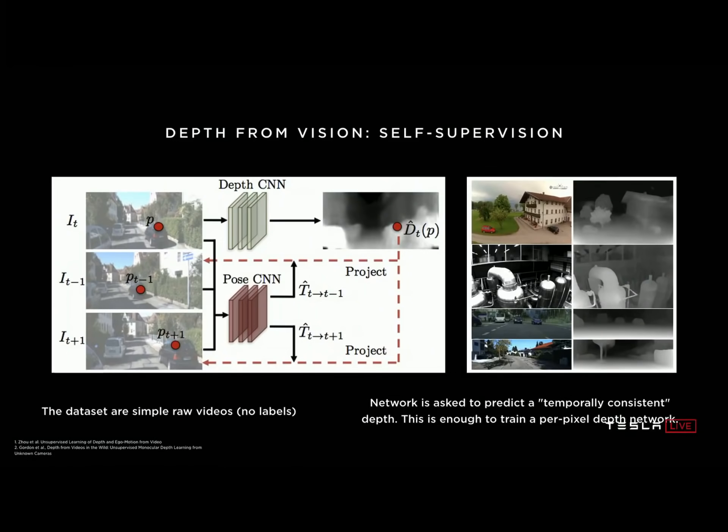The last mechanism I'll talk about briefly is slightly more fancy and a bit more technical. There are a few papers over the last year or two on this approach — it's called self-supervision. What you do is feed raw videos into neural networks with no labels whatsoever, and you can still get neural networks to learn depth. The neural network predicts depth at every single frame of that video, with no explicit targets to regress to. Instead, the objective for the network is to be consistent over time — whatever depth you predict should be consistent over the duration of the video — and the only way to be consistent is to be right. The neural network automatically predicts the correct depth for all the pixels, and we've reproduced some of these results internally, so this also works quite well.